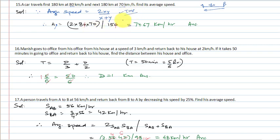Many people make the mistake of calculating average speed as (80 + 70) / 2 = 75 — that is wrong. The correct formula for average speed when distance is the same in both directions is 2xy upon x plus y.